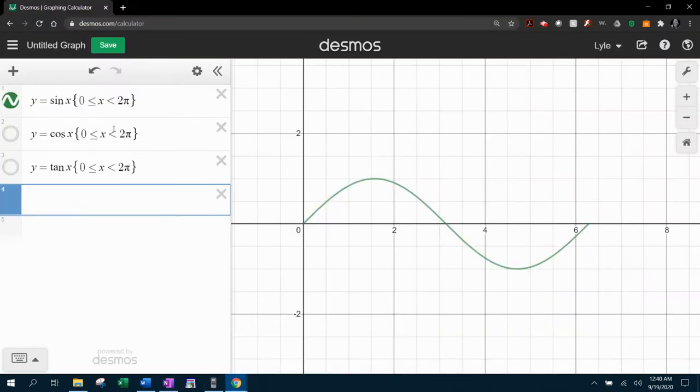So again, we want to know where sine theta, in this case sine of x, is equal to a half between zero and two pi. So this restricts the graph to go from zero to two pi.